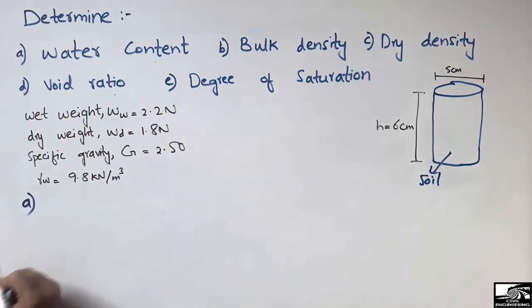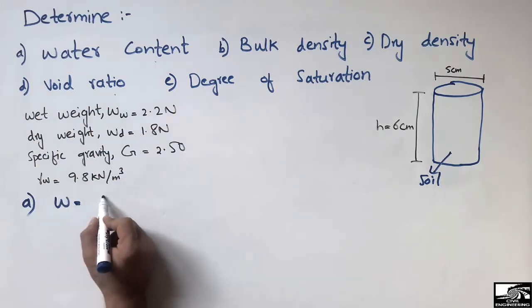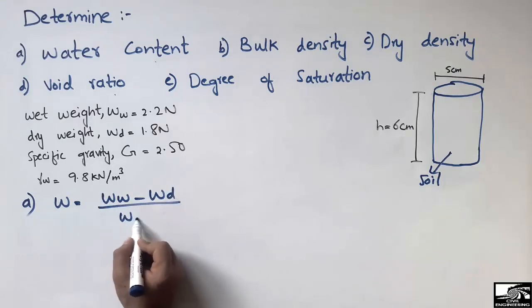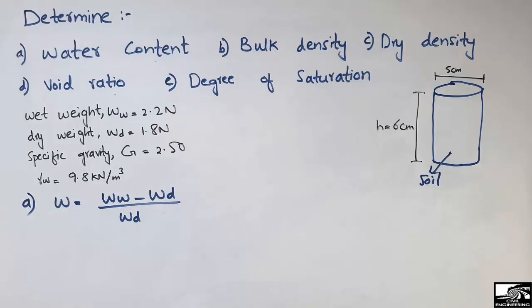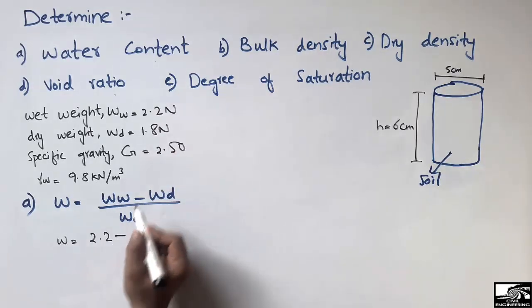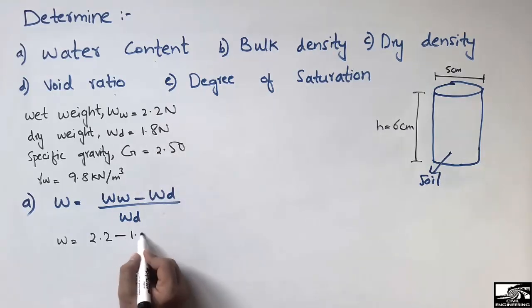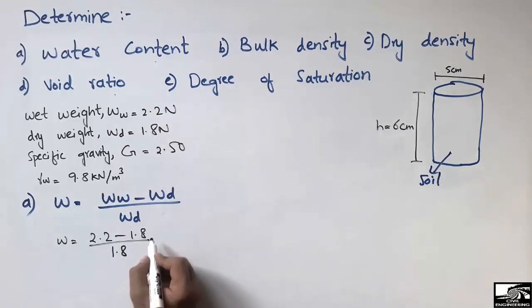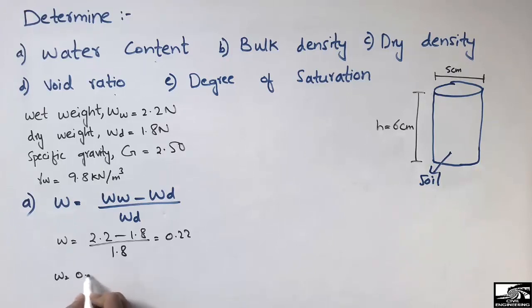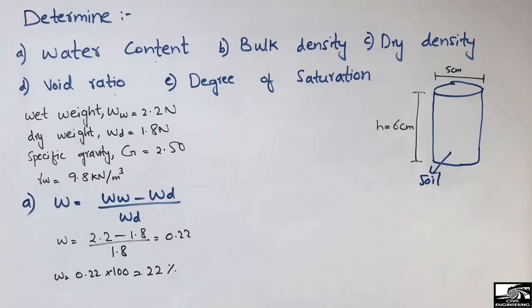The first thing is to find the water content. To find the water content w, we use the formula: the wet weight minus the dry weight, divided by the dry weight. Putting in the values: (2.2 - 1.8) / 1.8 = 0.22. Multiplying by 100 percent, we get a water content of 22 percent.